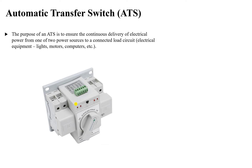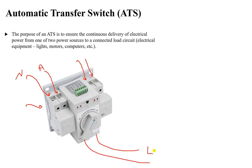Looking at this figure, we have an automatic transfer switch — this one is single phase. You can see two or three parts here. The first part is our primary source, where we connect the neutral and the phase (N and A). This is the primary source, and this is the backup source, coming from an electrical generator or another utility grid. Then we have the output going to our electrical load, such as a motor, computer, or any other electrical equipment.